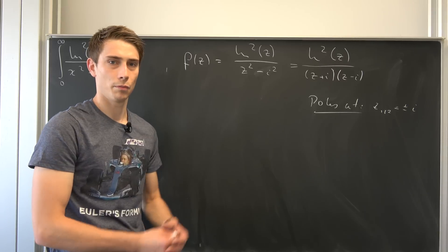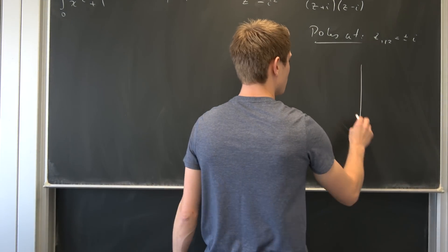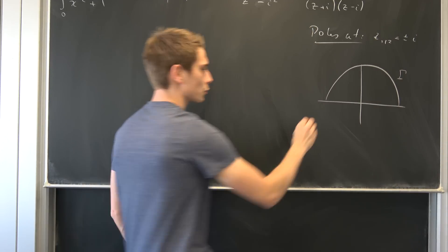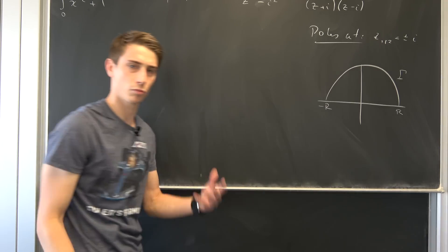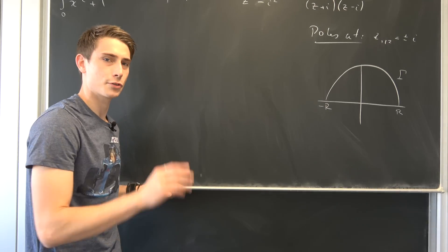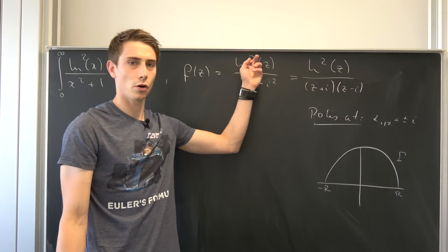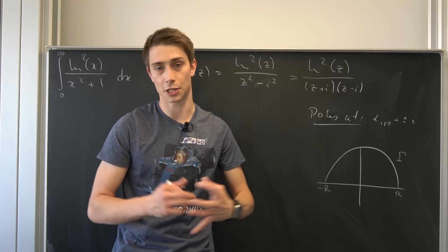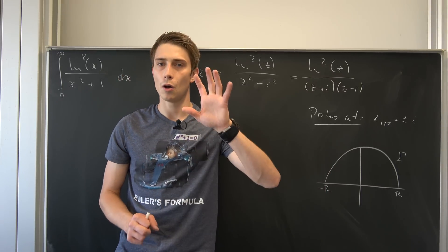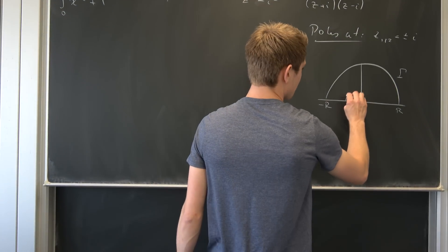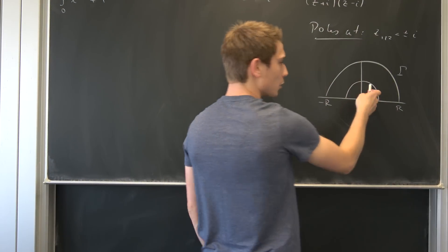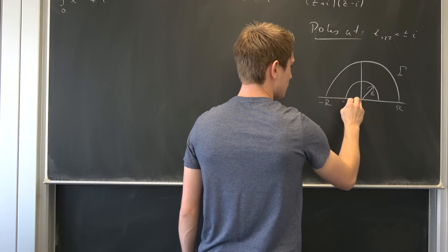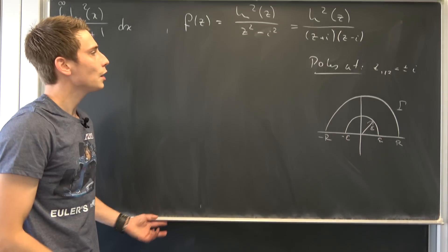We also have to introduce a proper contour in the complex plane. At first, we have this arc right here — let's call it gamma — and this goes from negative r to r along the real axis. But we also have to consider something: we have this natural log squared of z, and if z goes to zero our function would explode to negative infinity. We don't want that. So we really have to avoid this zero with a little semicircle of radius epsilon, which means this goes from negative epsilon to epsilon.